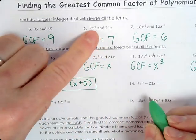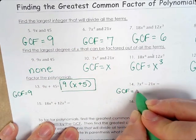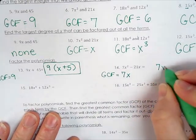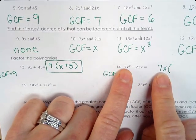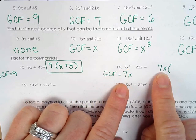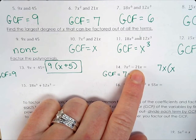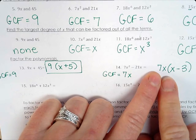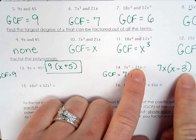The next one: the GCF is 7x. When we factor out 7x, what does 7x need to multiply by to get 7x squared? Another x. And what does 7x times something need to give −21x? That's −3. You can double-check: 7x times x is 7x squared, and 7x times −3 is −21x.